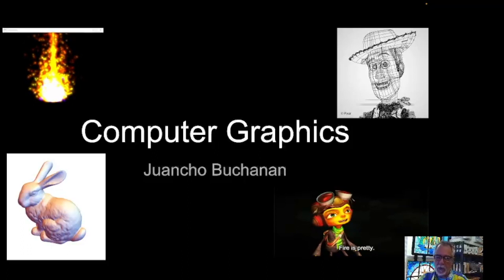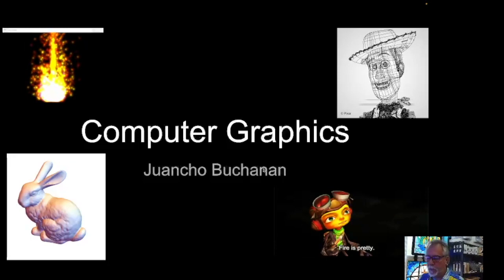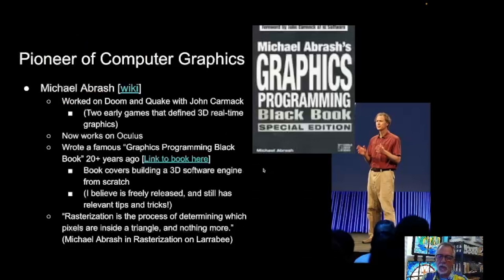Today we're going to talk about images — everything that we do is about images. Here's a link to Michael Labrash. He worked on Doom and Quake with John Carmack, so the early pioneers were just building graphics from the ground up. It was a really exciting time to be in computer graphics around then. Now we have a very mature industry and we're talking about it.